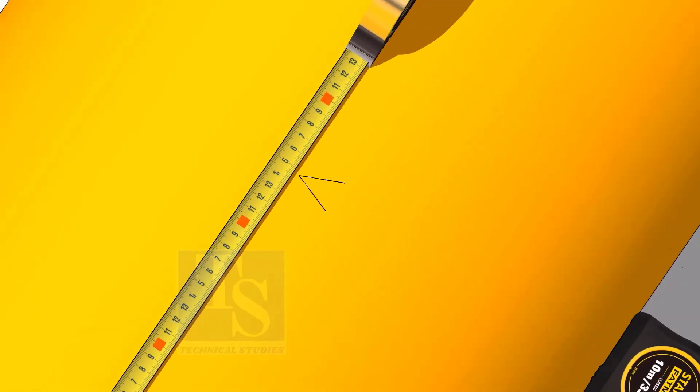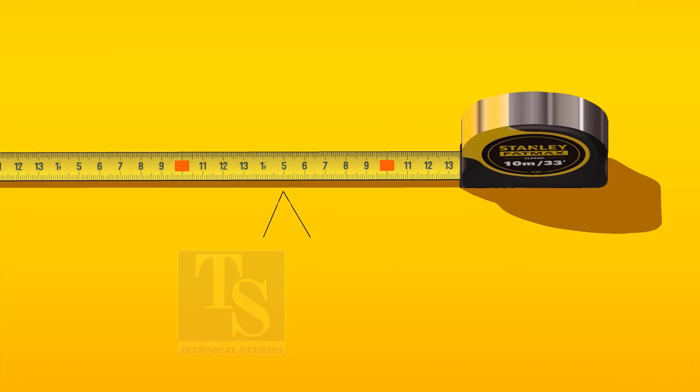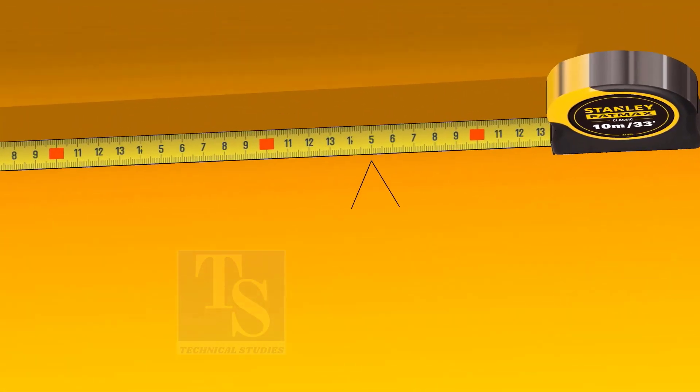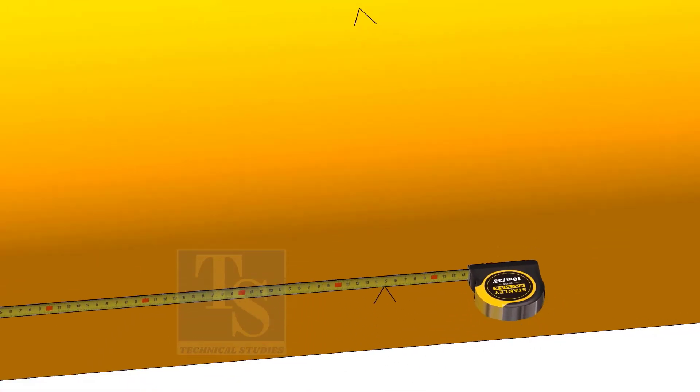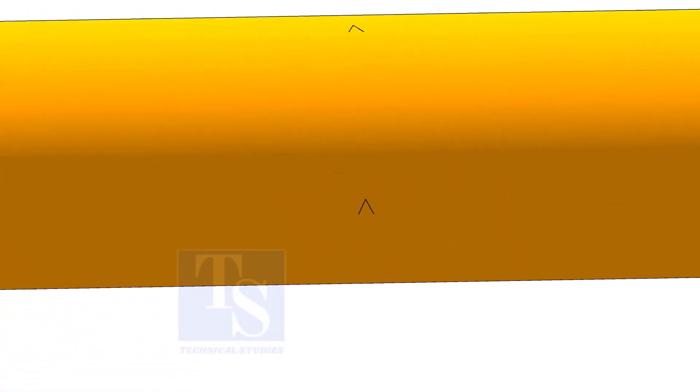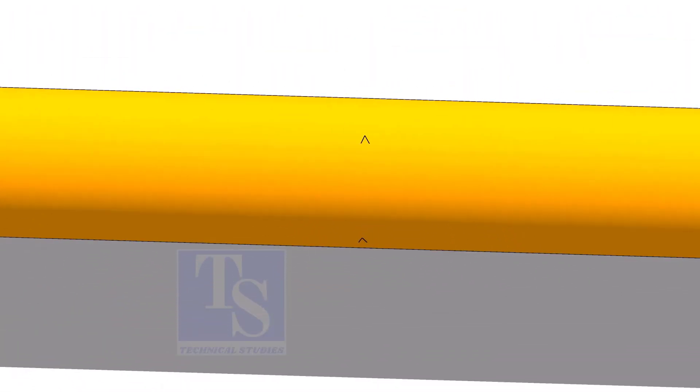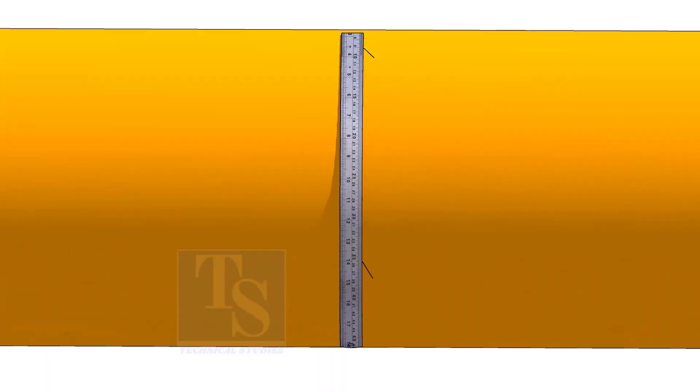Mark the length on multiple locations as shown. Mark the length of the pipe. Connect the marks using a bend scale.